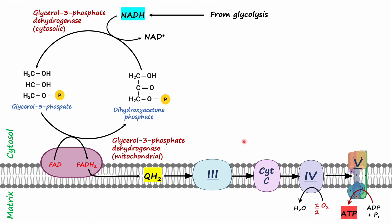This is the overview of the glycerol-3-phosphate shuttle. The most important thing to remember is that in this shuttle the electrons are passed on to FAD.